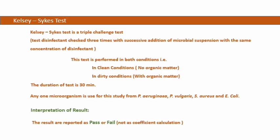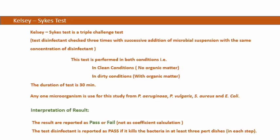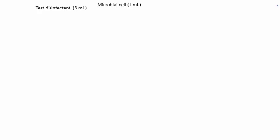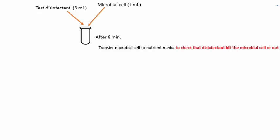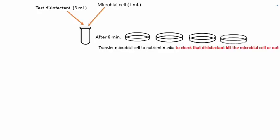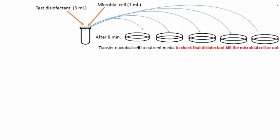Now we can see the procedure. Take 3 ml of test disinfectant and mix it with 1 ml of microbial cell suspension. Ise achhe se shake karte hain taaki disinfectant aur microbial cell achhe se contact mein aa jaayein. Phir 8 minutes ke baad is reaction mixture mein se ek loopful — around 0.1 ml mixture — ko add kiya jaata hai 5 alag-alag petri dishes mein. Yeh check karne ke liye ki is mixture mein bacteria kill hue hain ya nahi. Agar in petri dishes mein koi bhi microbial growth dikhti hai, it means bacteria kill nahi hue hain.